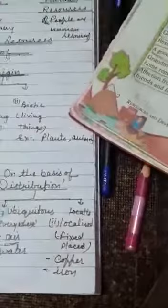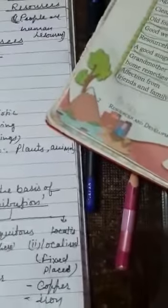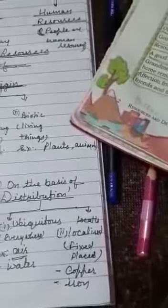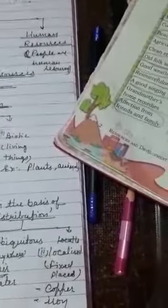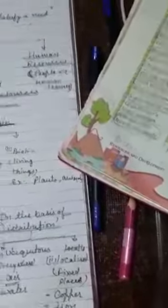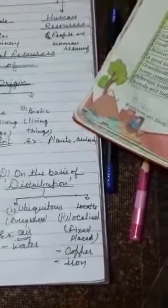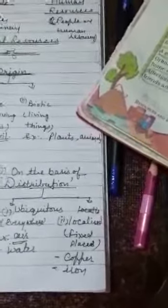Next is localized — that means fixed place. Ye jo resources hote hain localized, yeh ek fixed place par hi hote hain. Jaisa coal aur petroleum bataya tha — mostly richest area, West Asia. Next is copper, iron — in sab ki mining jo hoti hai fixed place par hoti hai, har jage nahi hoti. Aap chahe apne ghar ke aaspaas mining kar le, aur wahan coal aur iron mil jaye, aapko petroleum mil jaye — not possible. Toh these are fixed places — these categories are ubiquitous and localized.